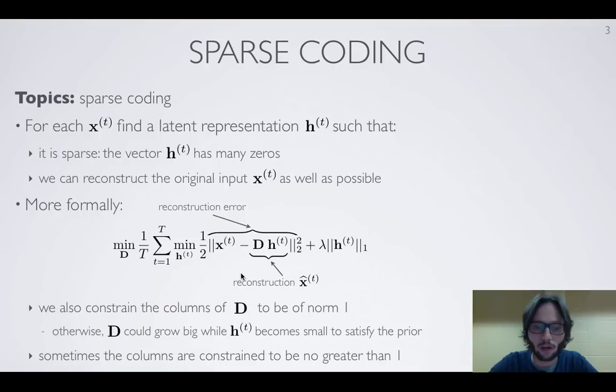In sparse coding, we usually refer to that matrix of weights as a dictionary matrix. We'll see a little bit more later why we use the term dictionary. This we will call our reconstruction, and we want the reconstruction to be as close as possible to the original input.